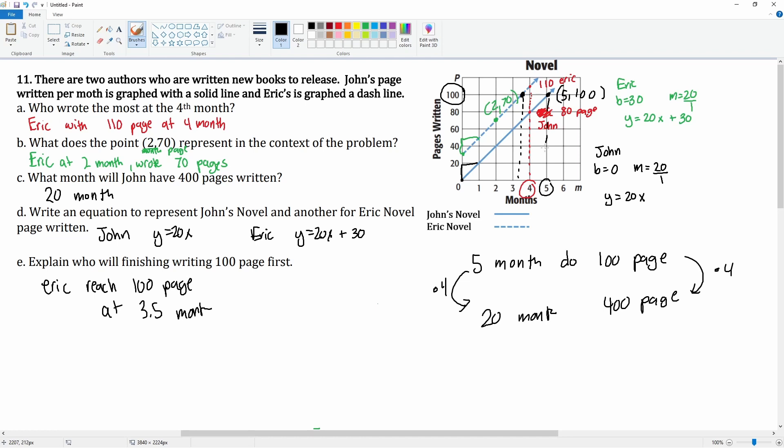But for John, which is the solid line, he reaches 100 pages at the 5th month. So we can say Eric will finish it first. Okay, so there you go.